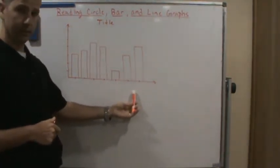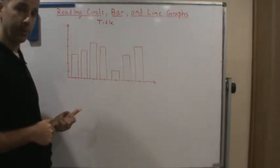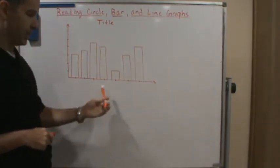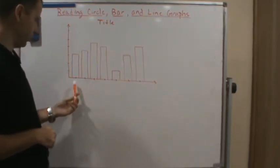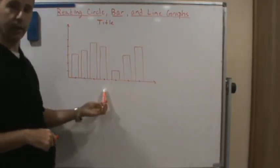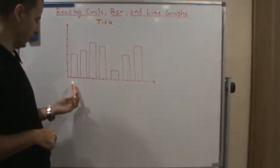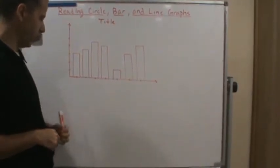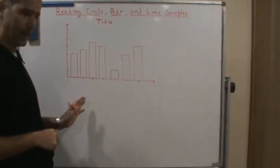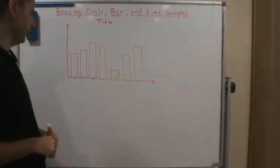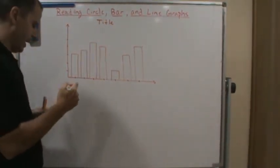Now, one axis tells you what each bar represents, and this could be each category that falls into it. So we could be talking about year. We could be talking about causes, all kinds of different categories.